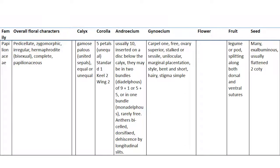The second family is Papilionaceae. Flower characters: pedicellate, zygomorphic, irregular, hermaphrodite or bisexual, complete, and papilionaceous — that is, butterfly-shaped. Calyx is gamosepalous, meaning united sepals.